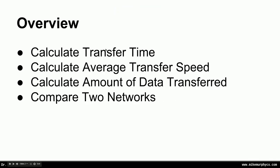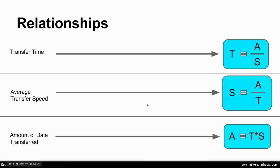I'm going to do four examples. The first one I'll calculate transfer time given the amount of data to transfer and the average transfer speed. The second example I'll calculate the average transfer speed given the amount of data and the transfer time. Third, I'll calculate the amount of data transferred given a transfer speed and time. In the fourth example I'll compare two options for moving data — two different networks — and see which would be faster. Recall from the prior lecture that transfer time equals amount of data divided by average transfer speed. We can also solve for speed given data and time, or solve for data given time and speed.